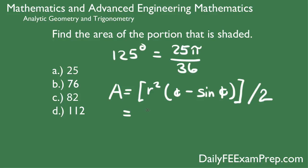The radius is 11 squared. We're going to plug in our radian value here for the angle, so 25π over 36 minus sine 25π over 36, divided by 2.